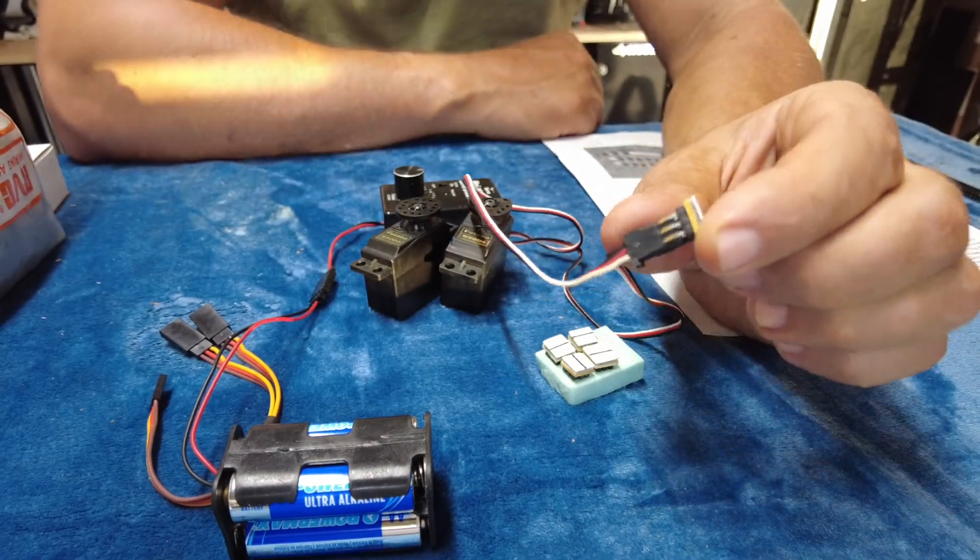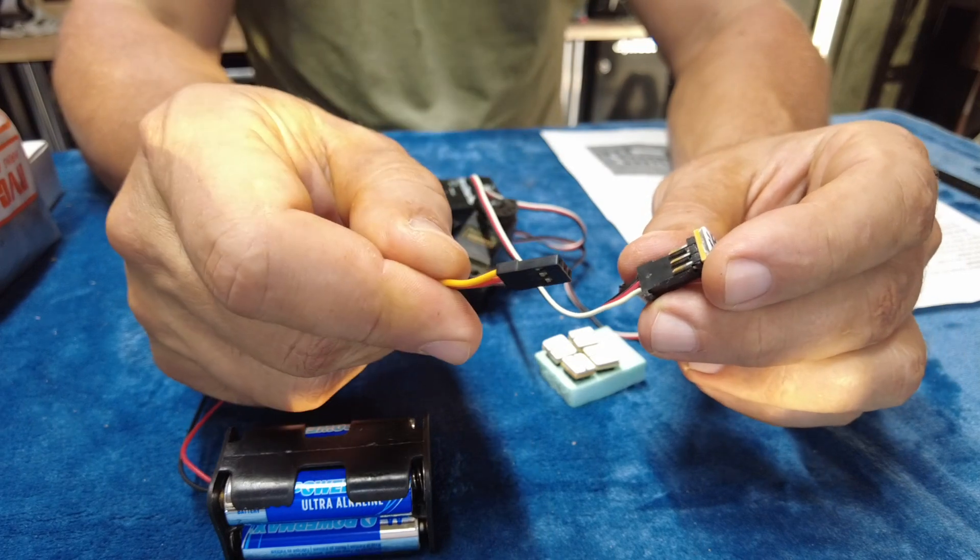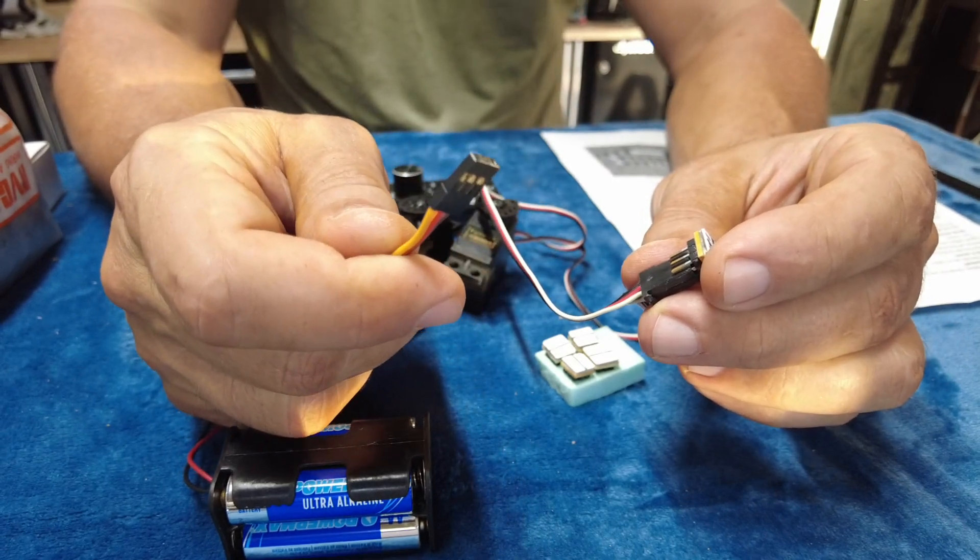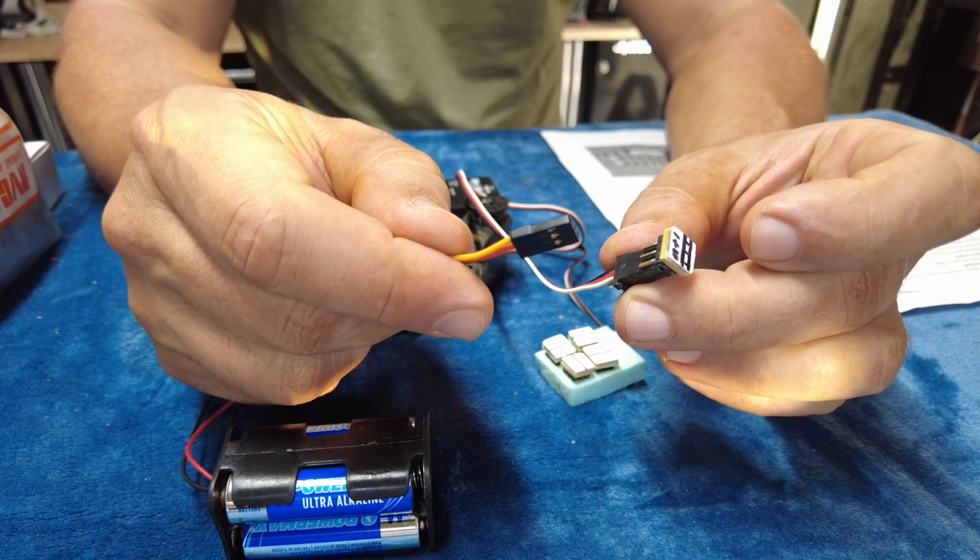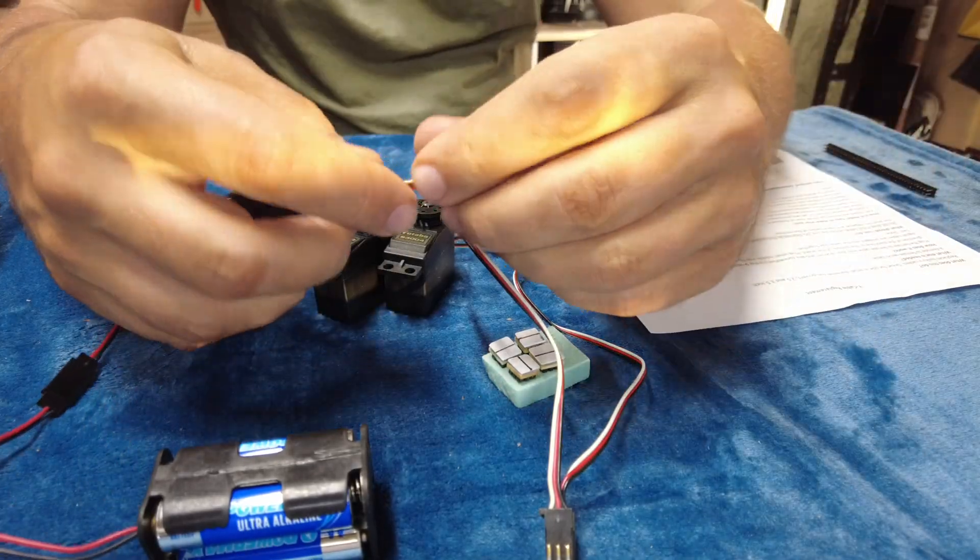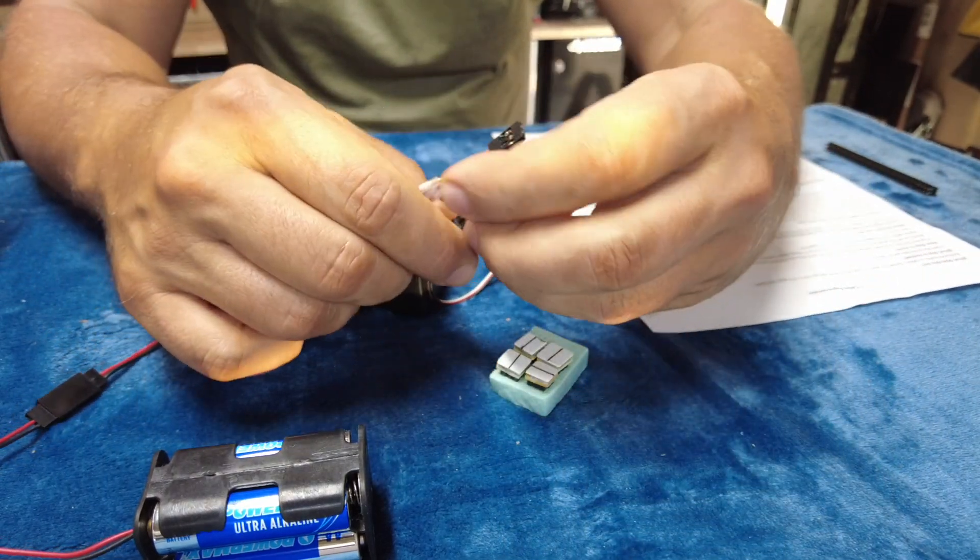Now, in order to use this, you actually need a male by male extension to go from your receiver into this Y splitter. So I just happen to have one made up here, a little shorty, and we'll go ahead and plug this in.